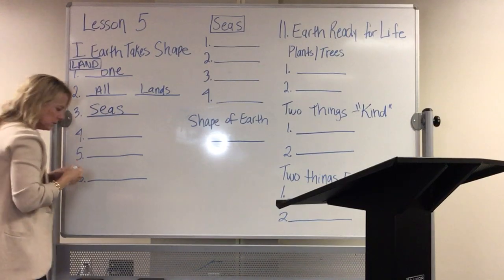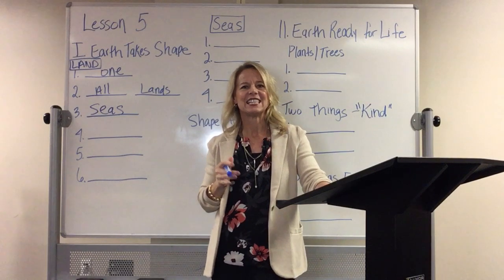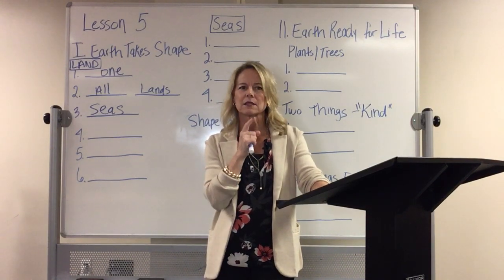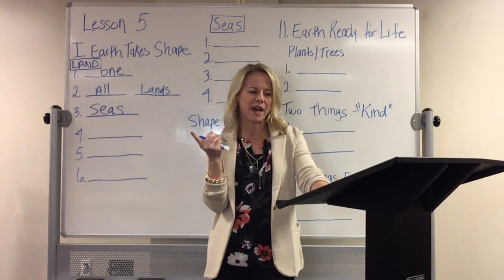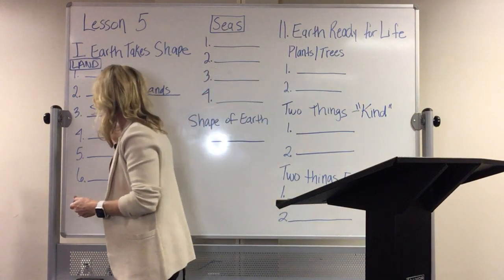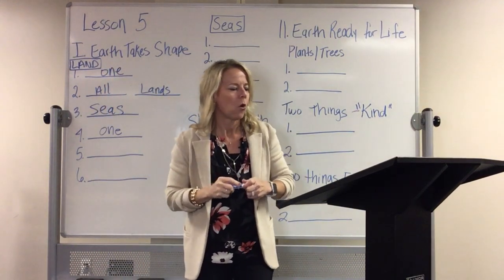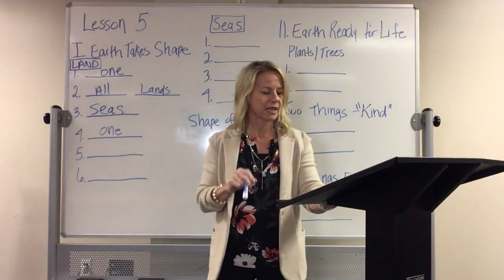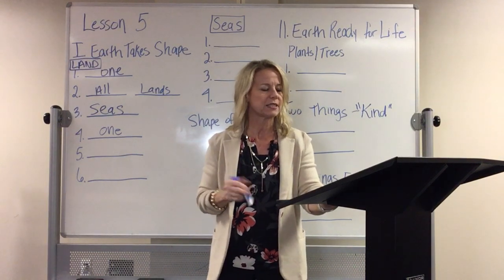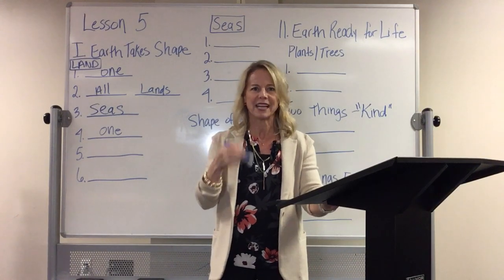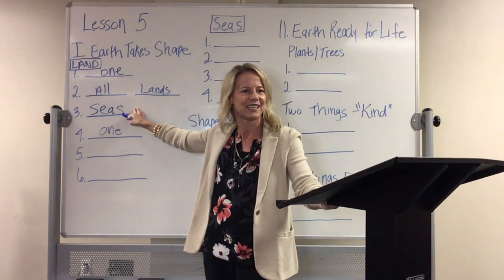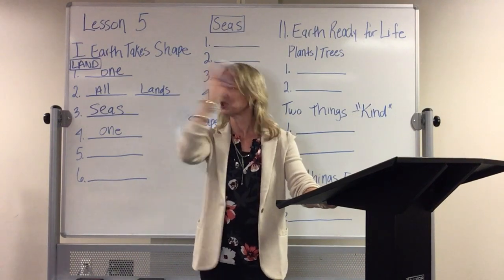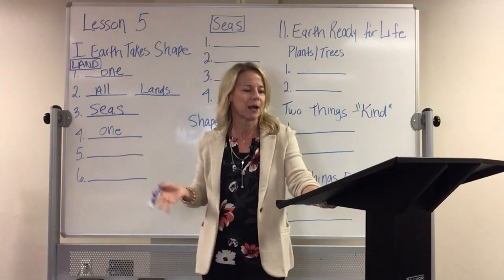The Bible says 'seas' with an extra S — how can there be more than one sea if all the land is in one place? Consider Australia: they have the Pacific Ocean on one side, the Indian Ocean on another, and the Great Southern Ocean to the south, yet it's just one continent. So it's not a stretch for God to have said 'seas,' even with one continent in the middle of a lot of water.